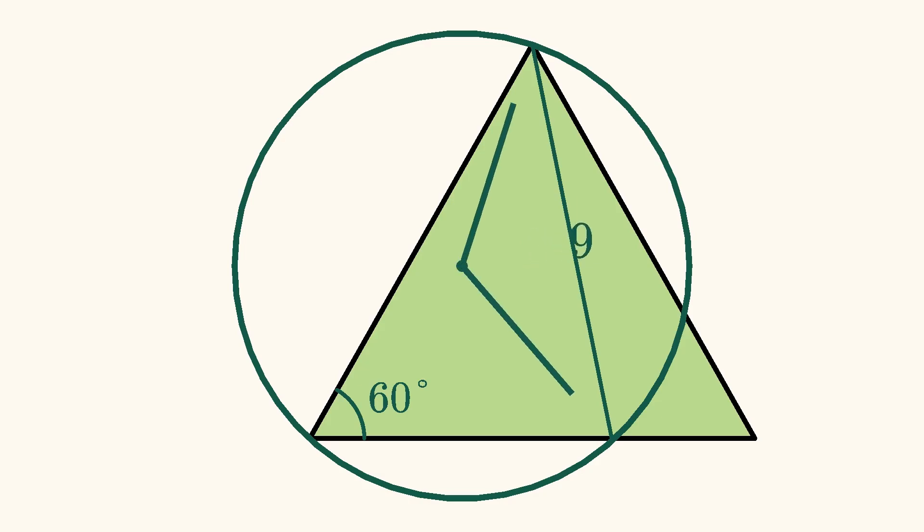We can draw these two radii to form a central angle which also subtends the chord. Although the relationship between these two angles isn't immediately clear, it's actually easy to find.